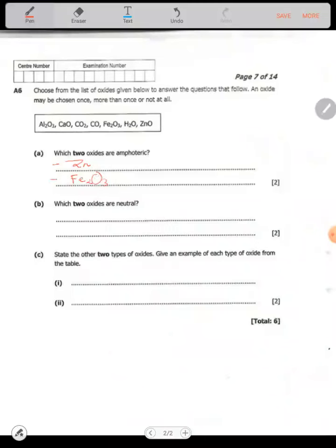Which two oxides are neutral? Neutral oxides are oxides that do not possess acidic or basic properties. One of them is carbon monoxide (CO) and water, that's hydrogen oxide (H2O).